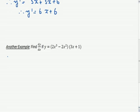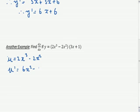So, what have we got here? Well, we've got u is equal to 2x cubed minus 2x squared. So, u dash, finding the derivative of u, we get 6x squared minus 4x.